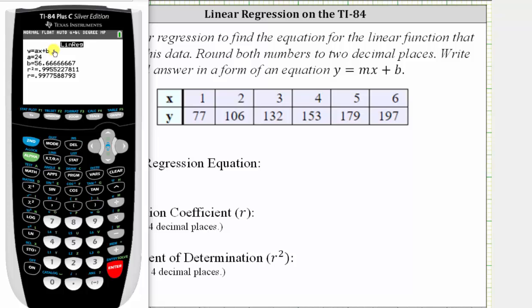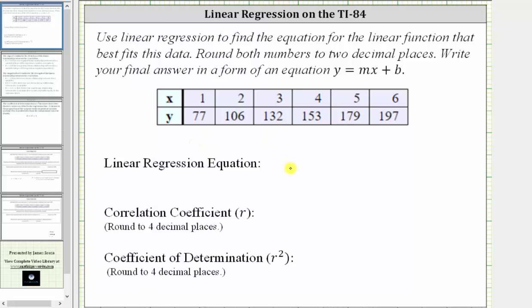Rounded to two decimal places, b is approximately 56.67, which means our regression equation is y equals 24x plus 56.67.